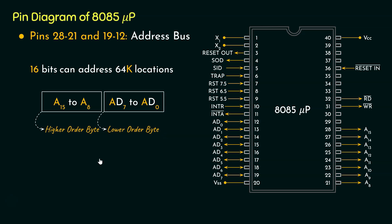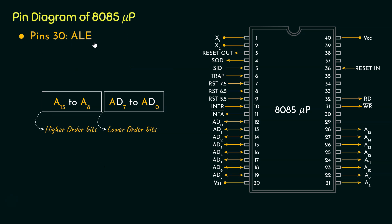Now you might be confused: we are using the same data bus right now as the address bus — how is this possible? Well, this is possible because via all these 8 pins, both the address and the data bus are multiplexed together. Now you might be wondering how the computer will let the peripherals know whether these pins are carrying data or the address — that is, the low-order byte. For this, we have the next pin: pin 30, or ALE.